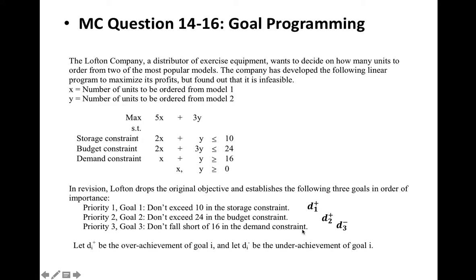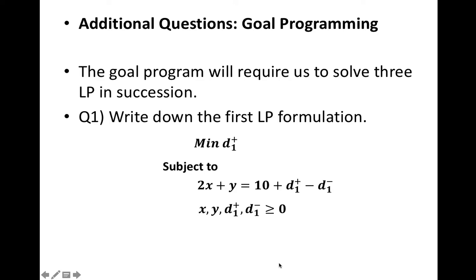The objective functions of the linear programs are often summarized in a single line as follows. Here, p1, p2, p3 indicate the objective functions for three linear programs. The goal program will require us to solve three LP in succession.